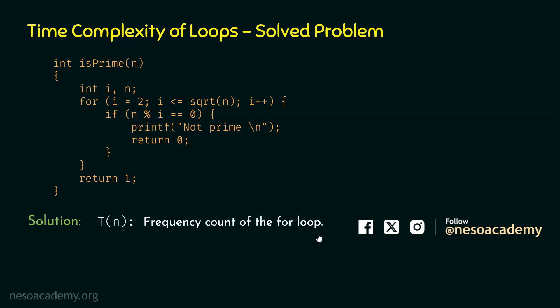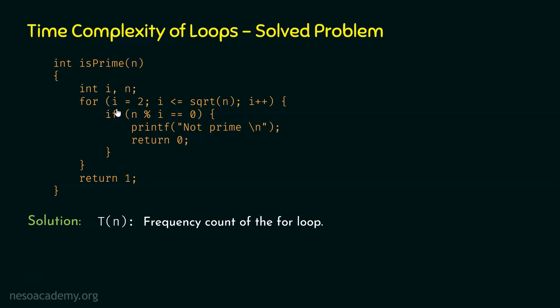How do we find tn? We know tn represents the frequency count of this for loop, or the number of times this for loop will execute. In order to find tn, let's first understand the working of this for loop. In this for loop, we are initializing i to 2, then comparing i with square root of n. This sqrt function has the capability to calculate the square root of a number. The number we are providing to it is n, so it will calculate the square root of n.